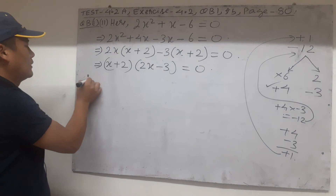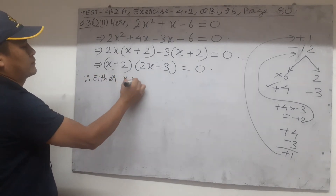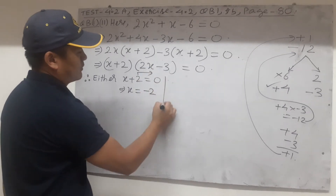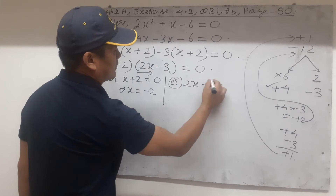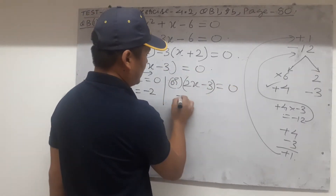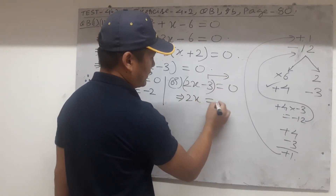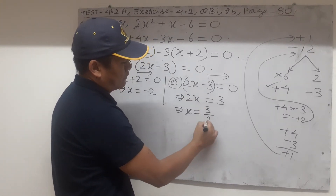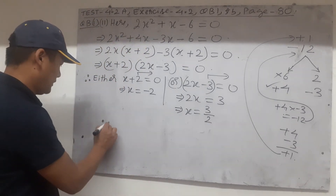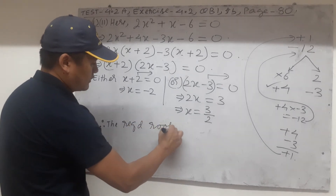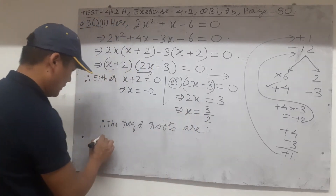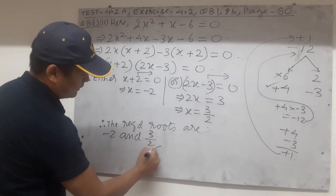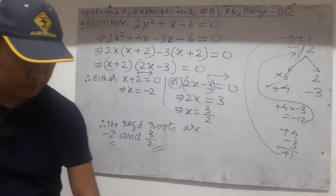This is called the factorization step. Therefore either the first factor x plus 2 equals 0, which implies x equals minus 2, or the second factor 2x minus 3 equals 0, which gives 2x equals 3, so x equals 3 by 2. The required roots are x equals minus 2 and x equals 3 by 2. Let's go to the third one.